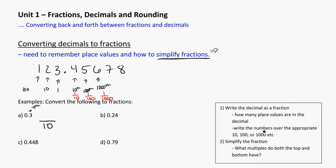That's our second step here: write the numbers over the appropriate ten, hundred, or thousands, etc. So this is tenths, and I know it's three tenths, so I'd write it as three over ten.